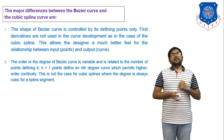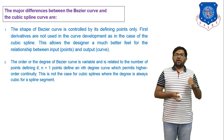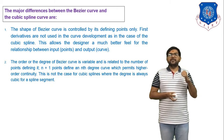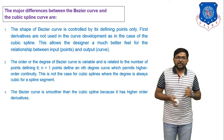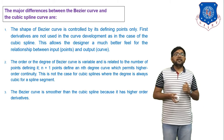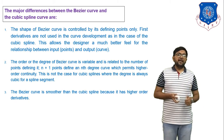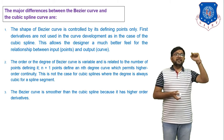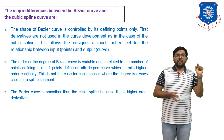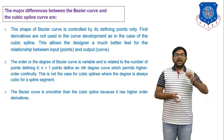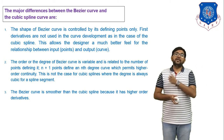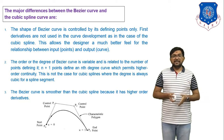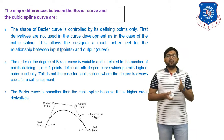The Bezier curve is smoother than the cubic spline. If n+1 points define a curve, it is an nth-degree curve, which permits higher-order continuity. This is not the case for cubic splines, where the degree is always cubic for each spline segment. The Bezier curve is smoother because it resembles a freehand curve, and its derivation is of higher order.